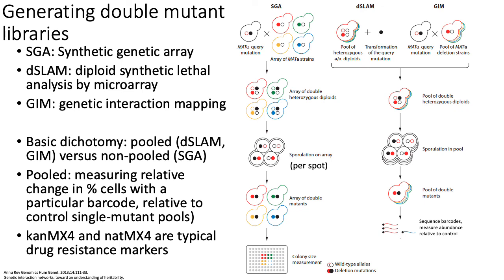Once you generate your library of single mutants, you need a technology for generating double mutants in a high-throughput way. In this lecture, we'll talk about three basic ways: SGA or Synthetic Genetic Array, DSLAM or Diploid Synthetic Lethal Analysis by Microarray, and GIM, the Genetic Interaction Mapping approach.